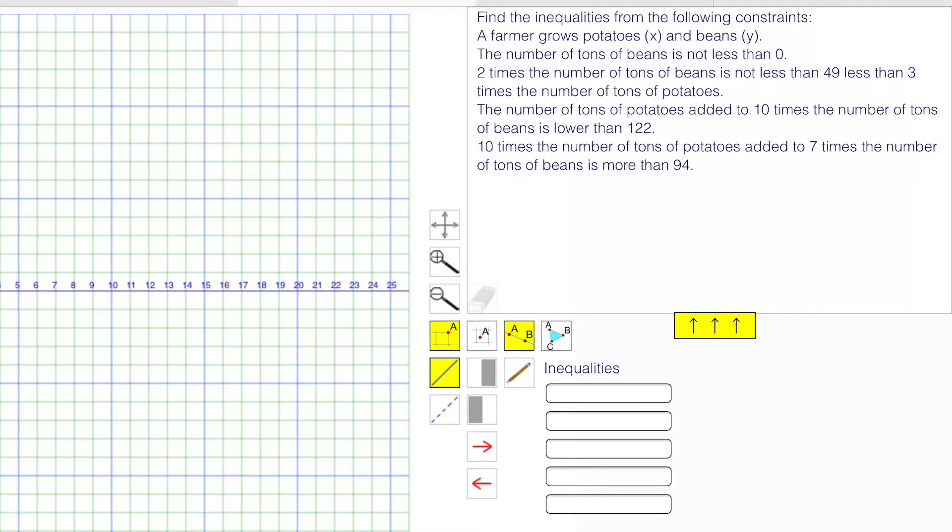The number of tons of beans is not less than 0, so y is greater than or equal to 0.